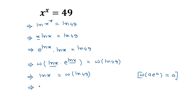So the value of x is equal to e to the power W of ln of 49. This is the general solution, and the approximate value of x is equal to 3.278. This is the solution of our given equation. If you like this video, please subscribe to my channel. Thanks for watching.